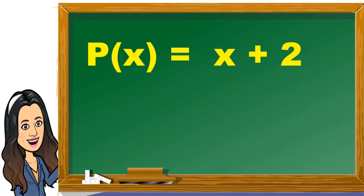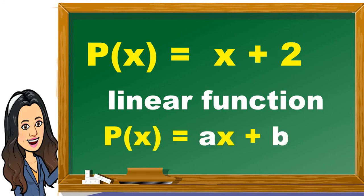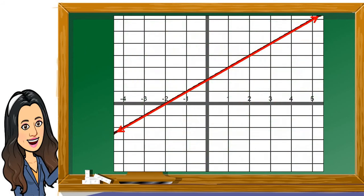Next, p(x) = x + 2. This is a linear function. A linear function is in the form p(x) = ax + b, where a and b are numbers, but a should not be equal to 0. In our example, the value of a is 1 and the value of b is 2. It is a linear function because the highest power of the variable x is 1. Here is an example of the graph of a linear function — it is a straight line.